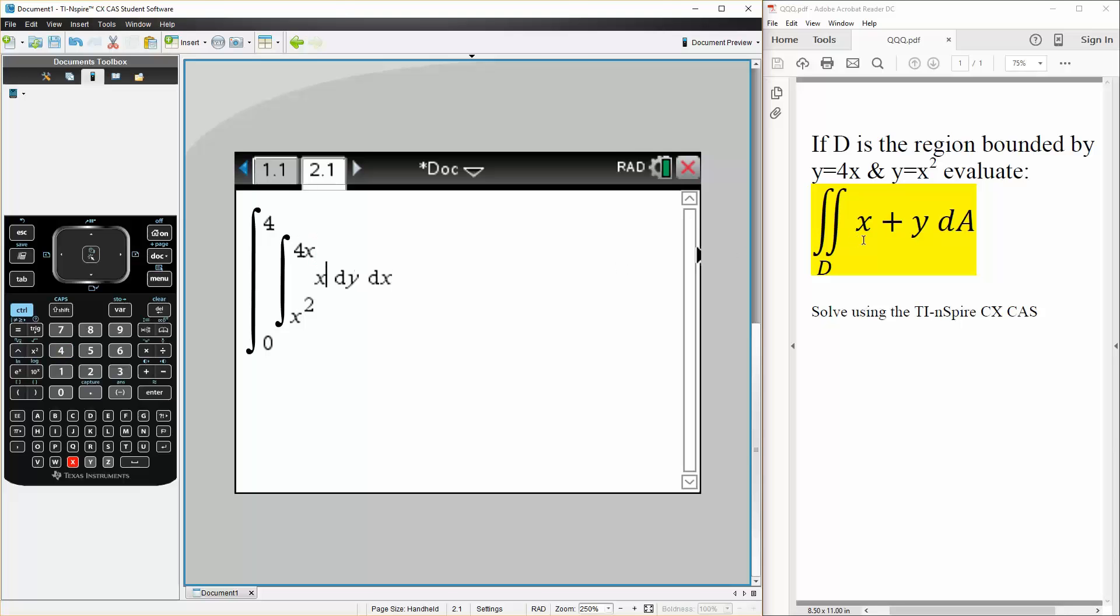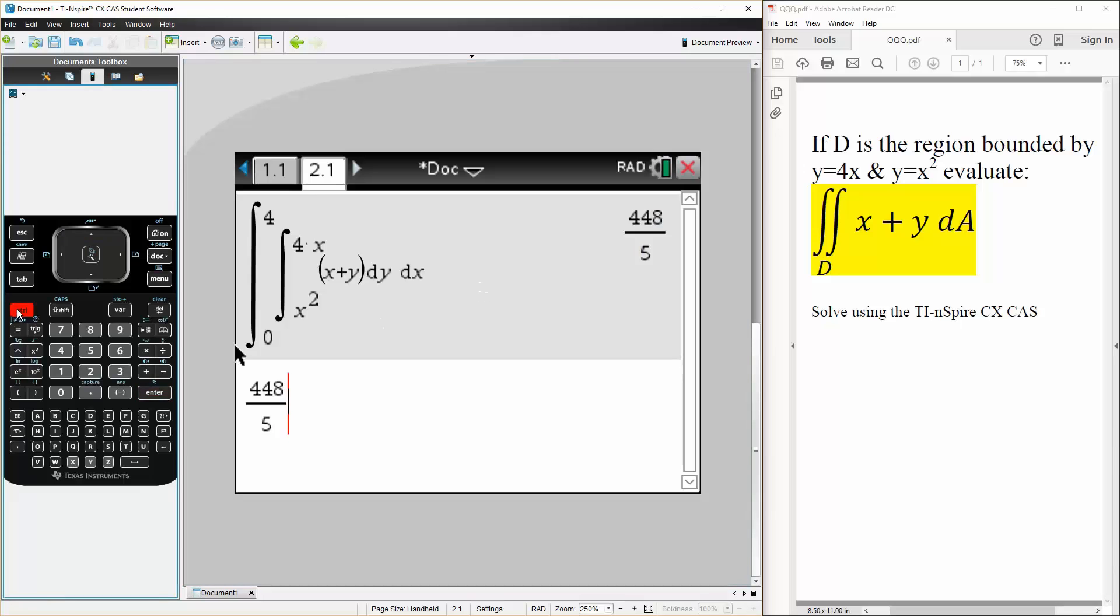And we simply write x plus y, like this, hit enter. We'll do an approximation, so control enter, and 89.6 is our final answer. And that's all we need to do.